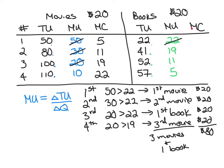Similarly, calculating the marginal cost of books: if she buys one book, she's giving up a possible movie she values at 10 units, so that becomes the cost of the first book. A second book means giving up the third movie — 20 utils. A third book means giving up a movie she values at 30, and a fourth book means giving up her one and only movie at that point, valued at 50. So the marginal cost of books is 10, 20, 30, and 50 — which is just the marginal utility column for movies transposed.